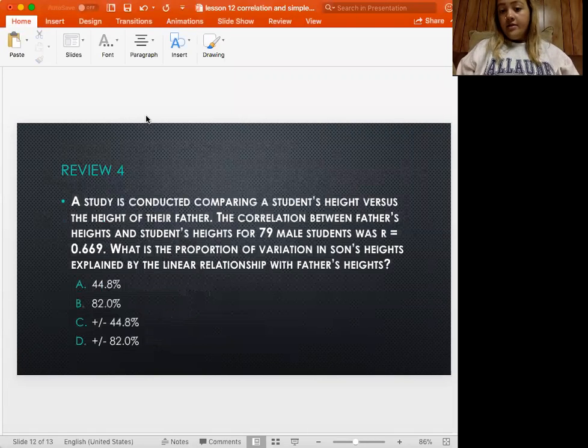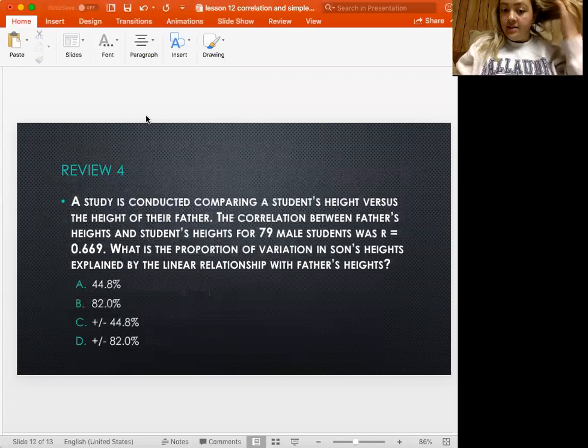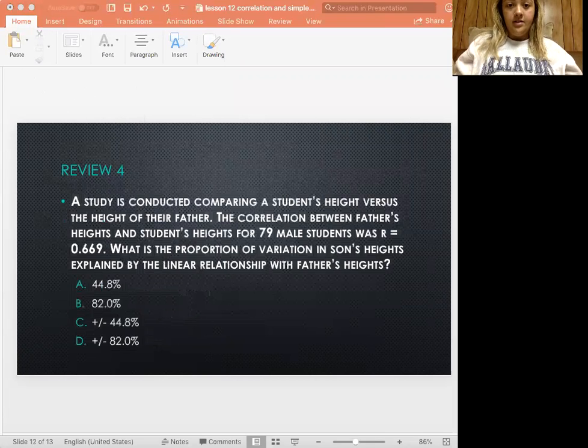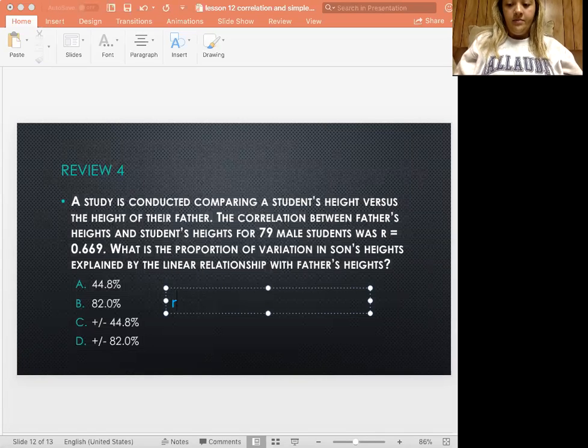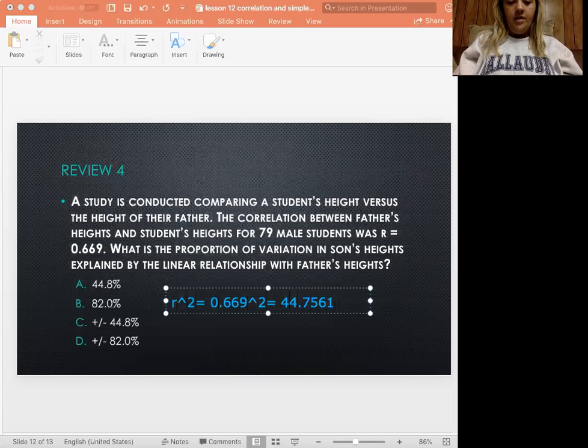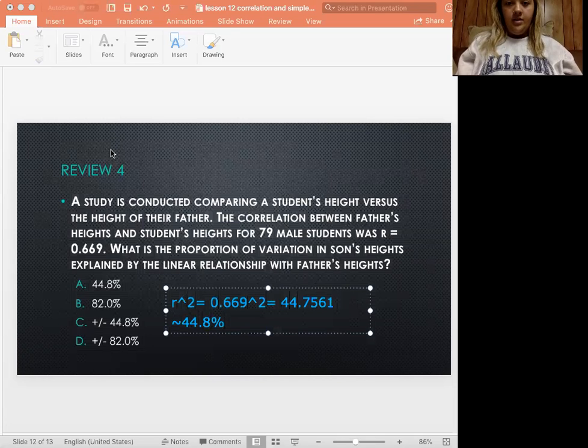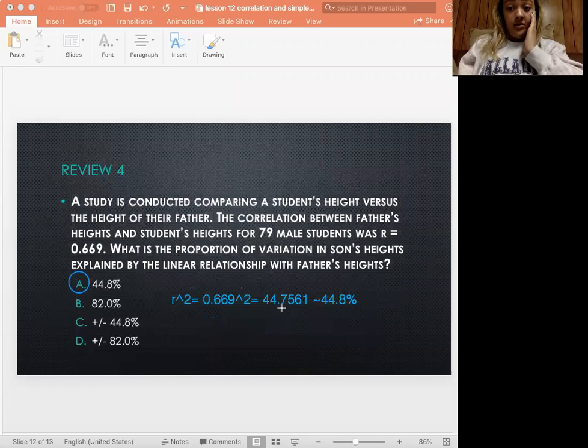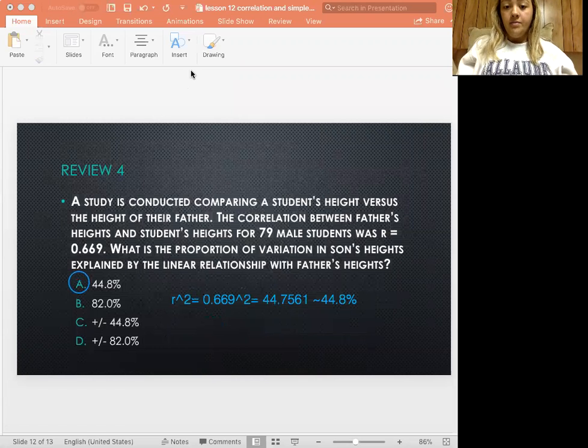All right, and lastly, a study was conducted comparing students' height versus the height of their father. The correlation between the father's heights and students' heights for 79 male students was r equals 0.669. What is the proportion of variation in son's heights explained by the linear relationship with father's heights? So all you have to do for this one is, this has to do with our coefficient of determination. So remember, you just want to do r squared. And if we did that, we would get 0.669, which is our r, and then we square that. We're going to end up getting 44.7561, which will round to being about 44.8 percent, which is why we would choose our answer as being A. And realize though that it wouldn't be C because it's not plus or minus. We squared it, so it's plus, and it's also because the original r was positive, so that's why we wouldn't have to change it to being negative. That's why our answer is A.